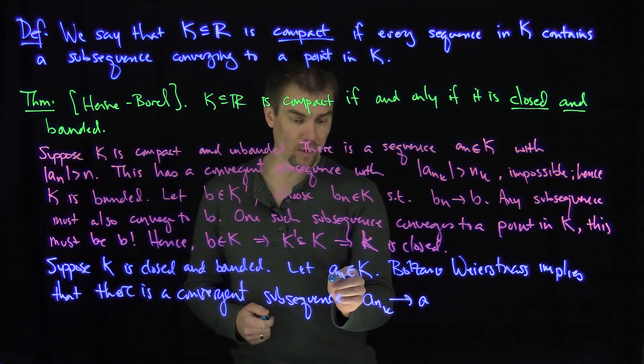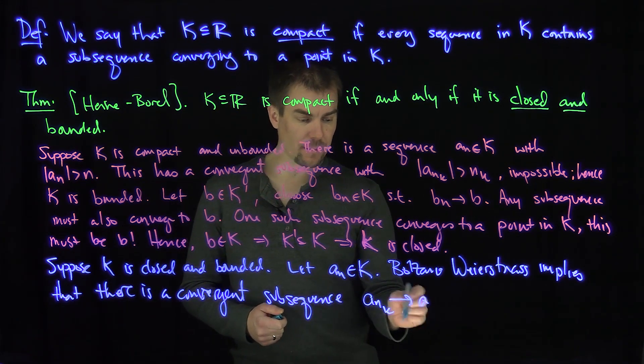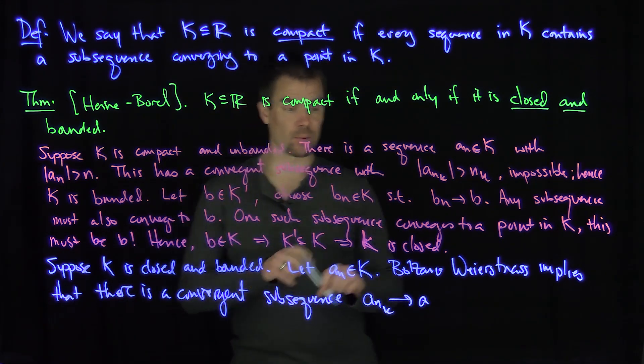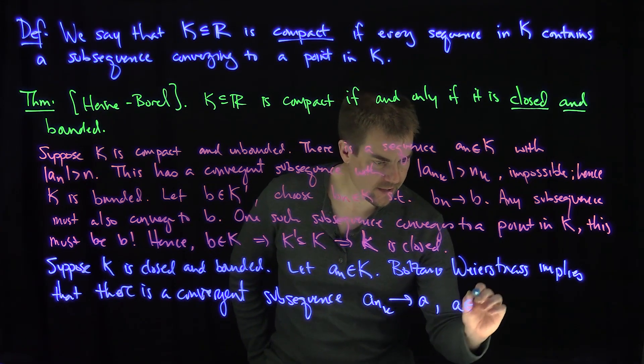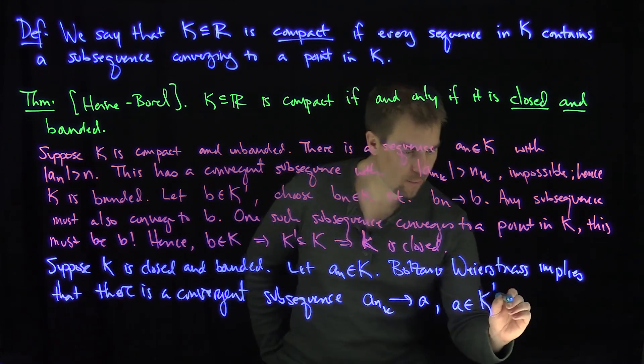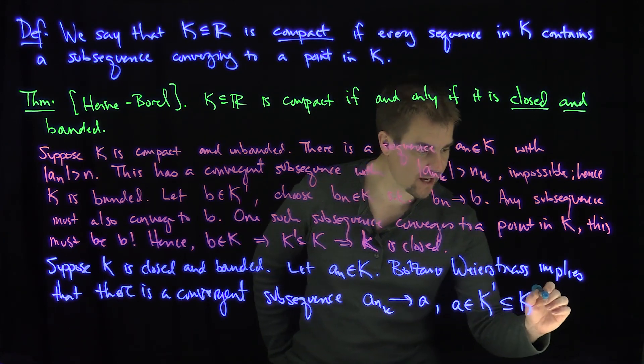Now what I have here is I have a sequence of points in k and a convergent subsequence. So what that tells me is that this point a is a limit point of k.